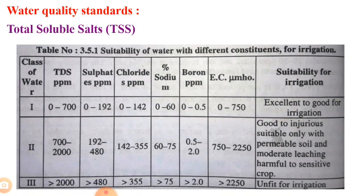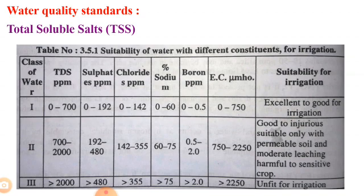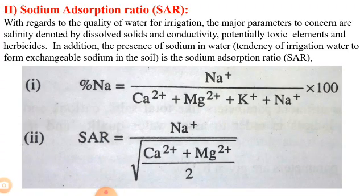The third category is where TDS exceeds 2000 ppm, sulphate exceeds 480 ppm, chloride exceeds 355 ppm, sodium percentage is greater than 75%, boron is greater than 2.0 ppm, and EC exceeds 2250 millimhos. That type of water is unsuitable for irrigation. This completes the chart for total soluble salts.